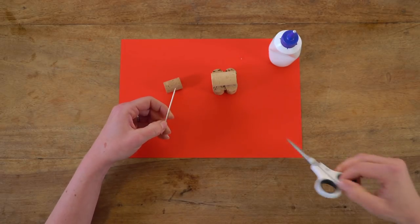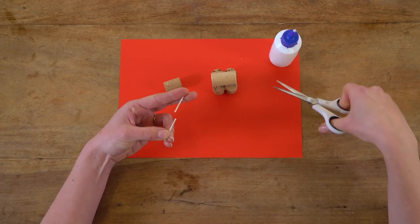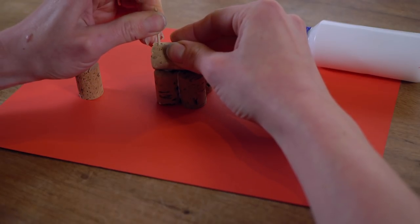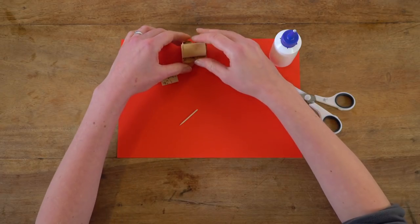Take a cocktail stick and cut it in half before placing it at one end of the body. Cocktail sticks are sharp so ask a grown-up to push it into the body for you.